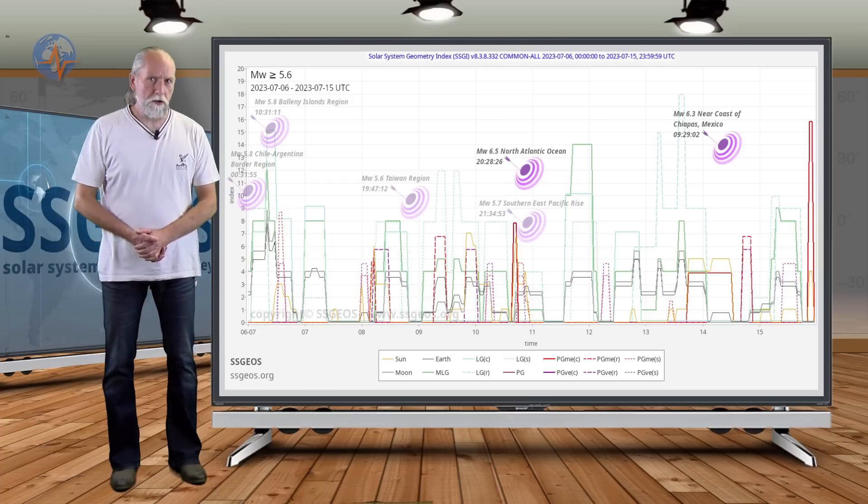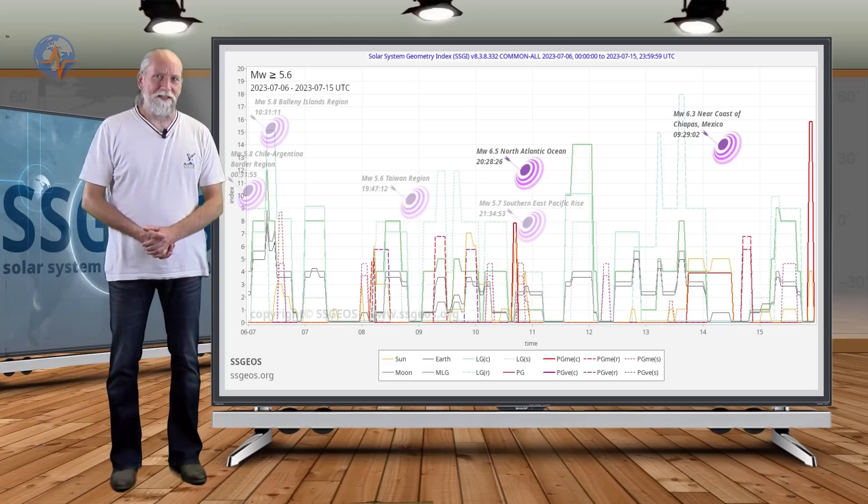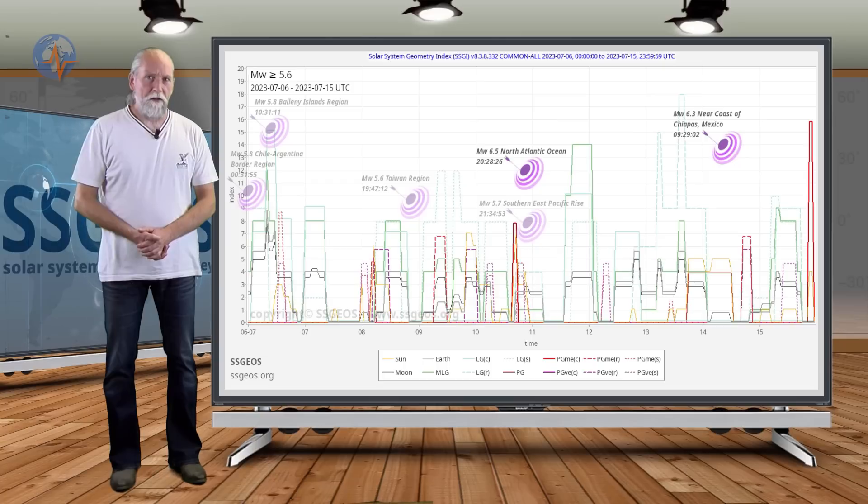If you look at the last two weeks or so, only two major or strong earthquakes: magnitude 6.9 and 6.5. A 6.9 occurred on the 2nd of July and then nothing much happened.